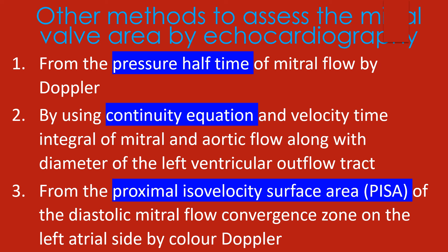Other methods to assess mitral valve area by echocardiography are: (1) from the pressure half time of mitral flow by Doppler; (2) by using the continuity equation and velocity time integral of mitral and aortic flow along with the diameter of the left ventricular outflow tract; and (3) from the proximal isovelocity surface area (PISA) of the diastolic mitral flow convergence zone on the left atrial side by color Doppler.